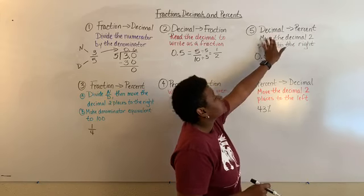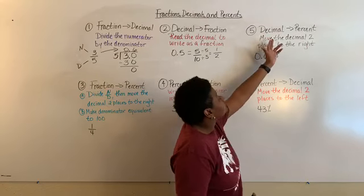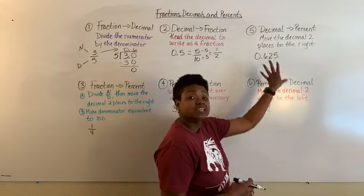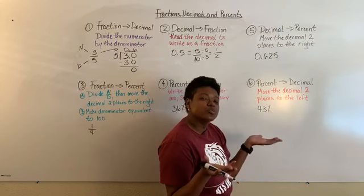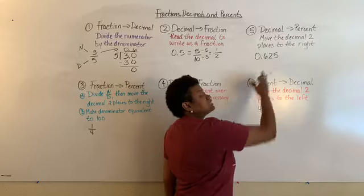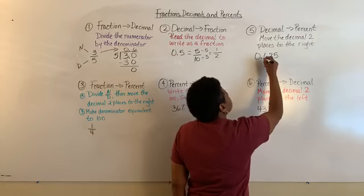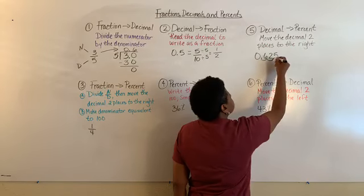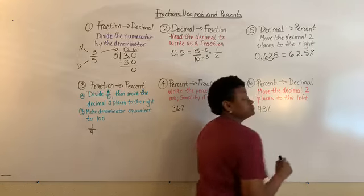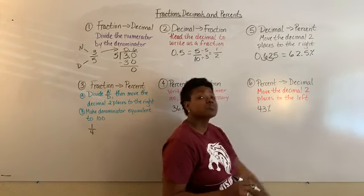To convert a decimal to a percent — "convert" just means to change — you move the decimal two places to the right. These two conversions are simple; you just have to remember the rule. So 0.625, or six hundred twenty-five thousandths, becomes 62.5 percent when you move the decimal two places to the right.